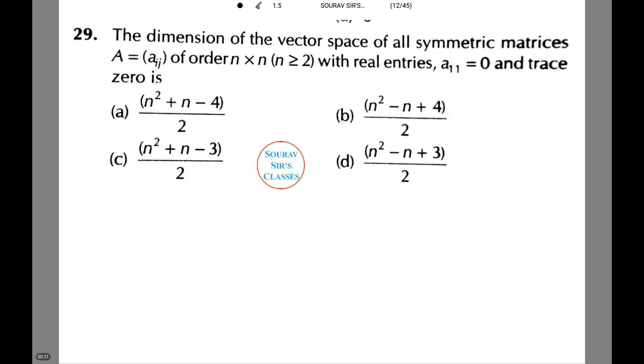The dimension of the vector space of all symmetric matrices A = (aᵢⱼ) of order n×n where n ≥ 2 with real entries and a₁₁ = 0 and trace 0. Therefore, the required dimension is...